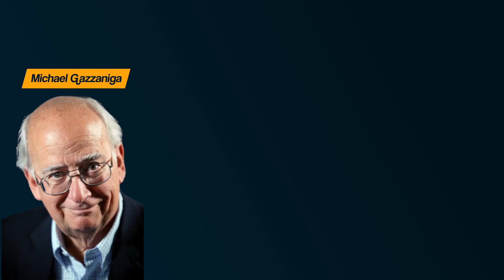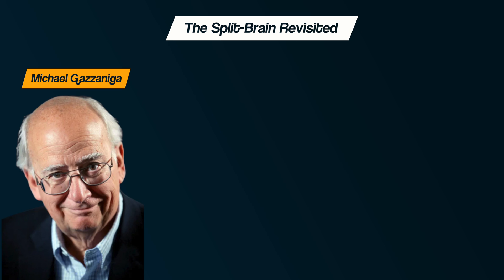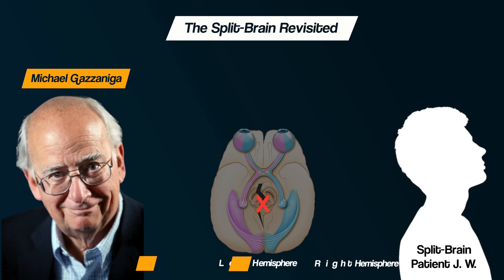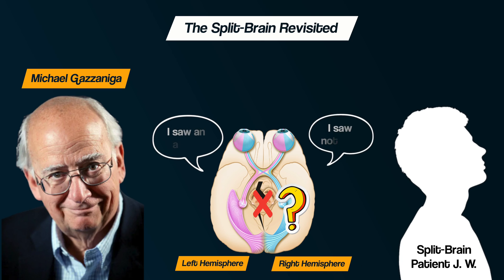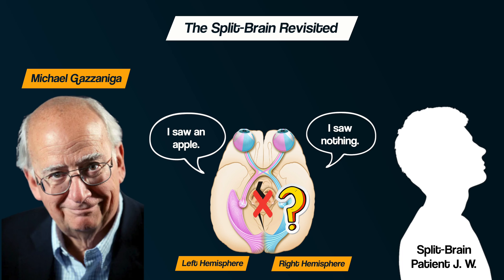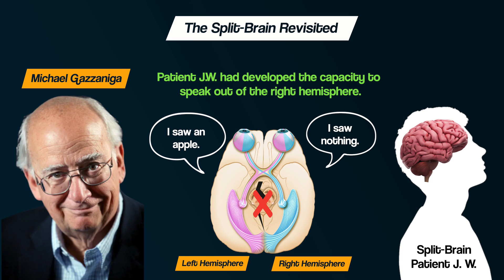Another interesting issue is that there are some contradictory findings. For example, Gazzaniga himself wrote an article in 1998 titled 'The Split Brain Revisited,' in which he reported on a patient referred to as JW. Split-brain research had suggested that the right hemisphere was unable to handle even the most basic language. However, his patient JW had developed the capacity to speak out of the right hemisphere, meaning he could speak about information presented to either side — all as a result of the brain's ability to change and adapt, called brain plasticity.